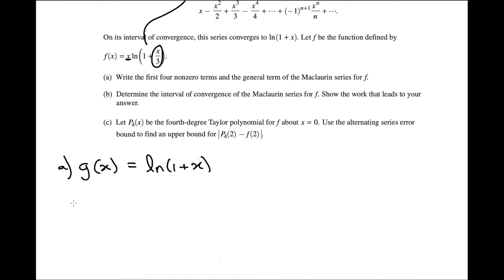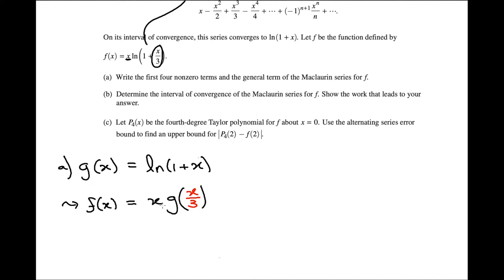So given that, we can reach the conclusion that f(x) is the same thing as x times g(x/3). And I already have a Maclaurin series for g(x), so I could use this Maclaurin series for g(x), plug in x/3, multiply that by x, and I will have my Maclaurin series for f.